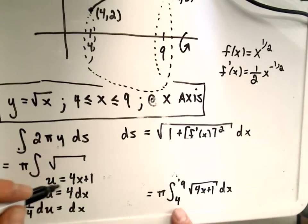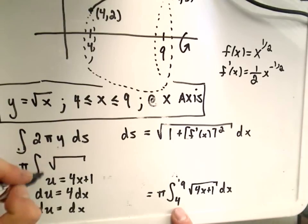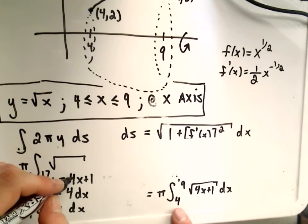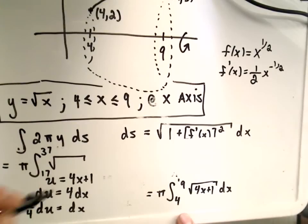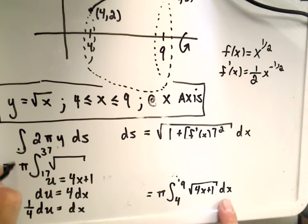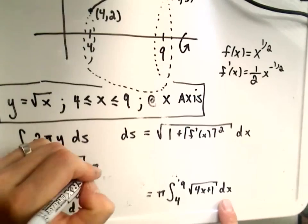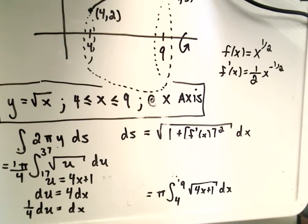We have to change our limits of integration as well. So the original lower limit was when x was 4. So 4 times 4 is 16 plus 1, we'll get 17. And then if you plug in 9, you'll get 36 plus 1, or 37. My dx is being replaced by the 1/4. So I'll pull that out front, du. And then underneath the radical, I just have square root of u left over.